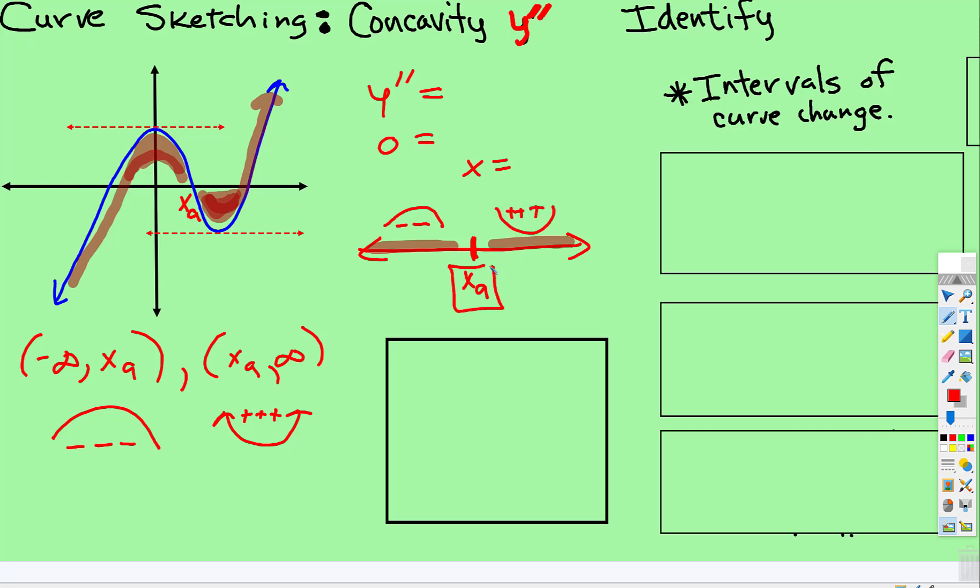And this point right there, because it switches from concave down to concave up, so it goes like this, concave down to concave up, that point right there, at some point, while it's curving from down to up, that's called an inflection point.